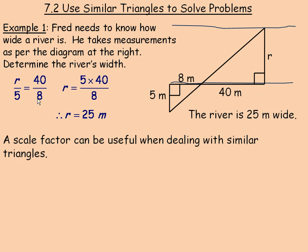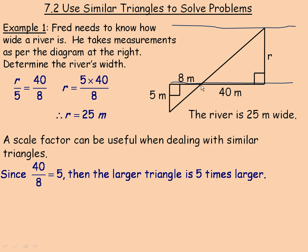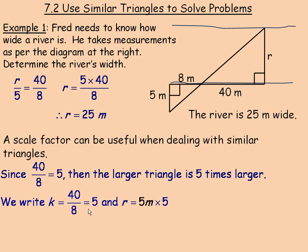A scale factor can be quite useful when dealing with similar triangles. This is an alternate method to finding the 25 meters. Notice that 40 is 5 times bigger than 8 — dividing 40 by 8 gives 5. That means the larger triangle is 5 times larger than the smaller one, so every side over here must be 5 times bigger. The scale factor k equals 40 divided by 8, which is 5 — the multiplying factor to get the larger triangle from the smaller one. To find r, take the 5-meter side and multiply by the scale factor 5 to get 25 meters.